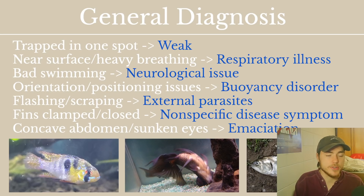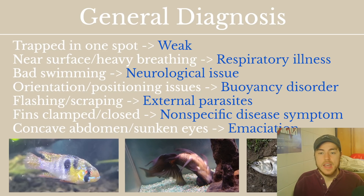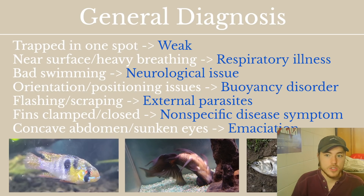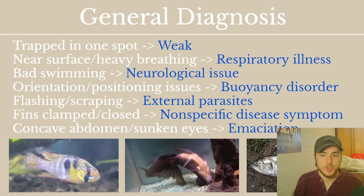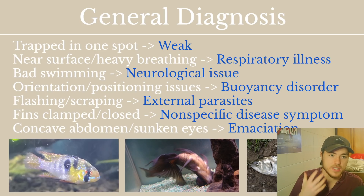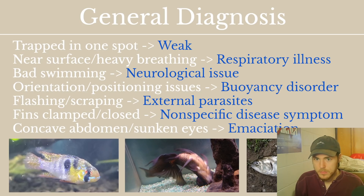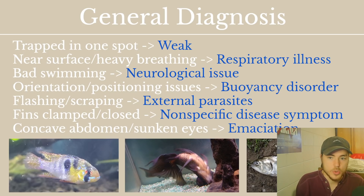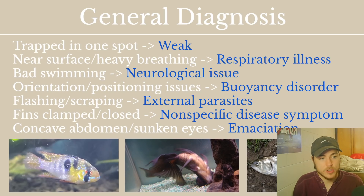For general diagnosis, these are what you look at when you see a fish. If a fish is trapped in one spot of the tank, it's generally due to weakness — something is making them unable to swim, and the current is controlling them. If they're near the surface or breathing very heavy or fast, it's usually due to a respiratory illness. If they're swimming poorly, it's usually due to a neurological issue — something within the brain is not functioning.